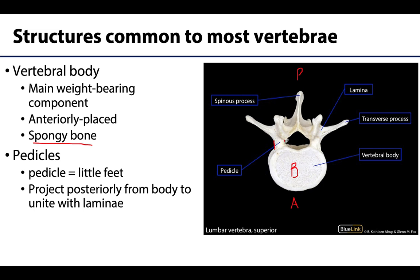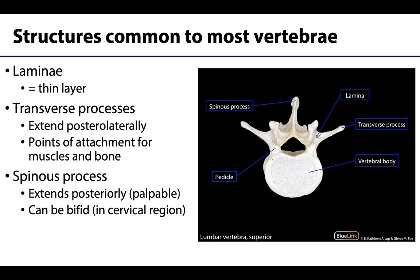Moving more posteriorly, you have the pedicles — little feet-like extensions that project posteriorly and connect the body to the laminae. The laminae are thin plates of bone that help close off the vertebral arch and the vertebral foramen, which is where the spinal cord runs through. If you ever need to access the spinal cord, a laminectomy involves cutting through the laminae and reflecting that portion of bone back to gain access.